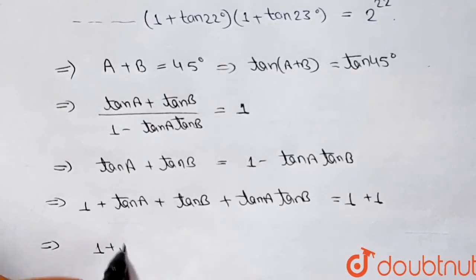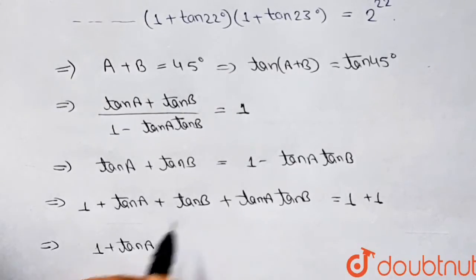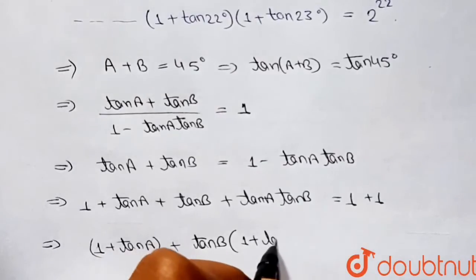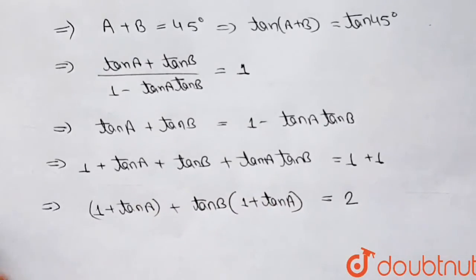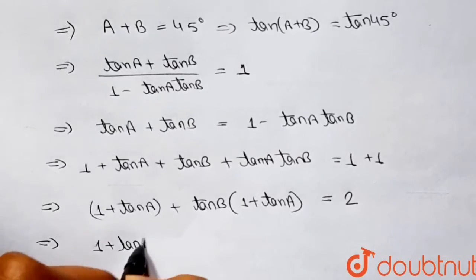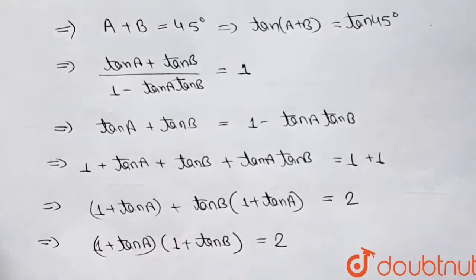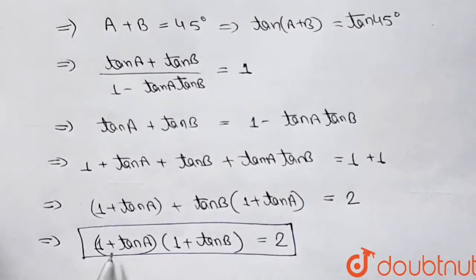Adding 1 to both sides gives us (1 + tan a)(1 + tan b) = 2. Taking 1 + tan a common from both terms: (1 + tan a)(1 + tan b) = 2. So this is the key result we are going to use: if a + b = 45°, then (1 + tan a)(1 + tan b) = 2.